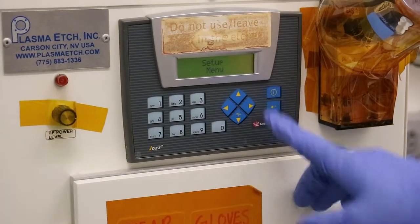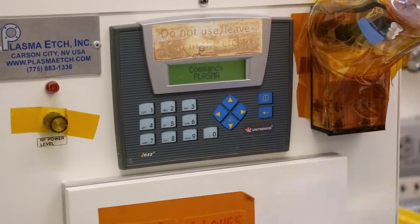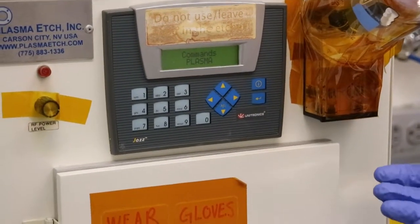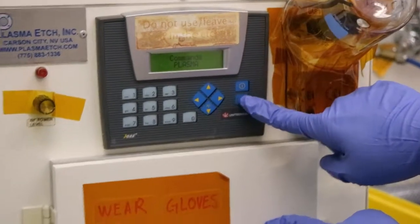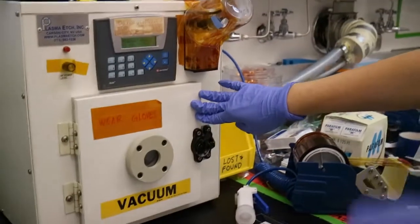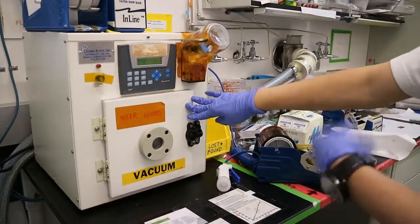Then go back to the command menu. Plasma means it will make a vacuum and also start the plasma treatment. Just in case, you should hold the door, push the door a little bit to make sure it makes the vacuum.